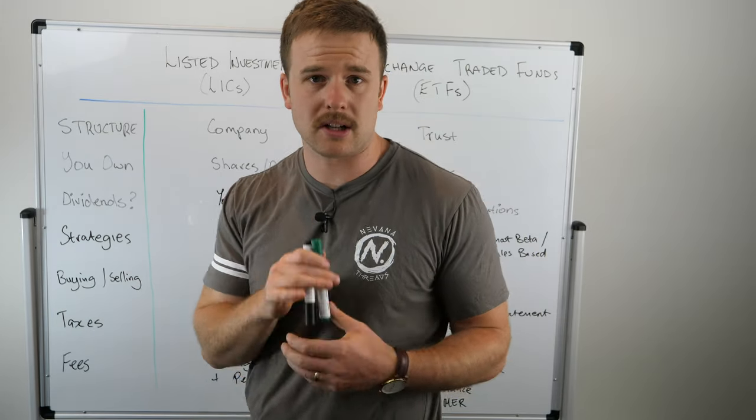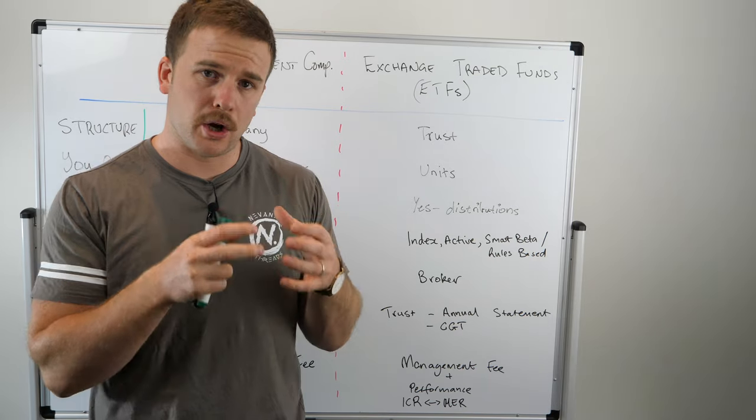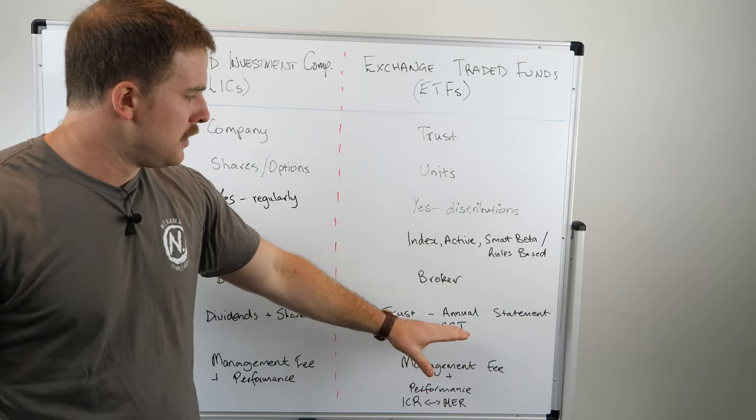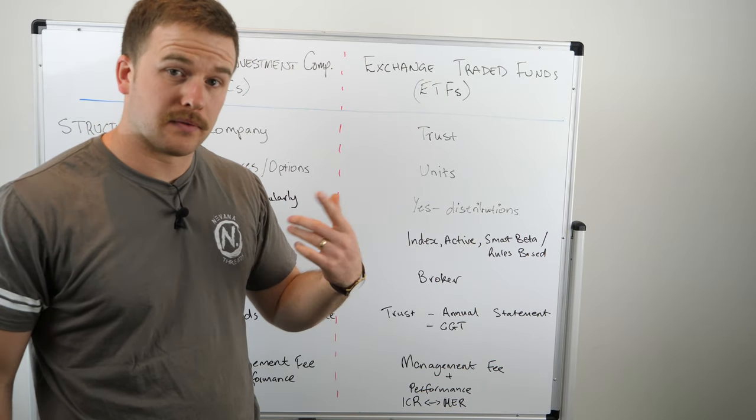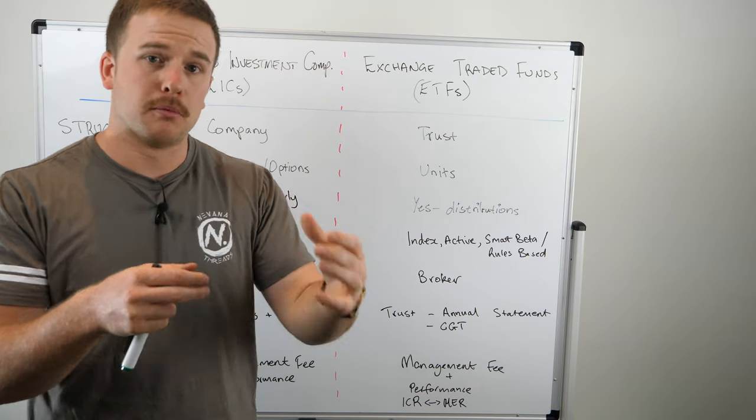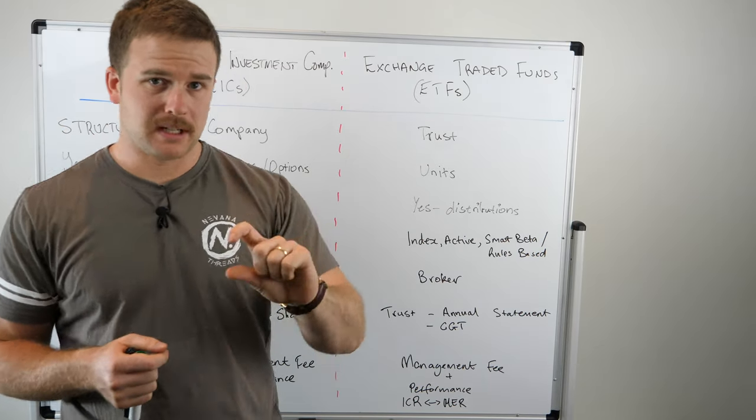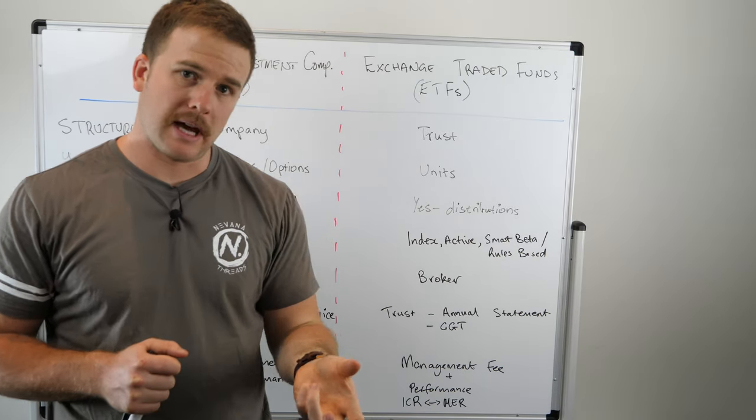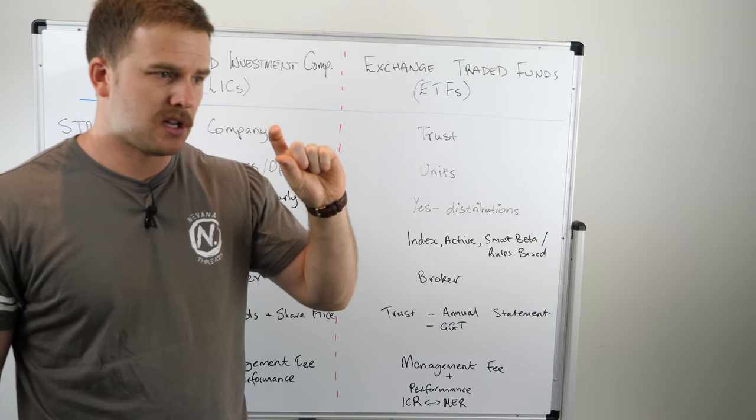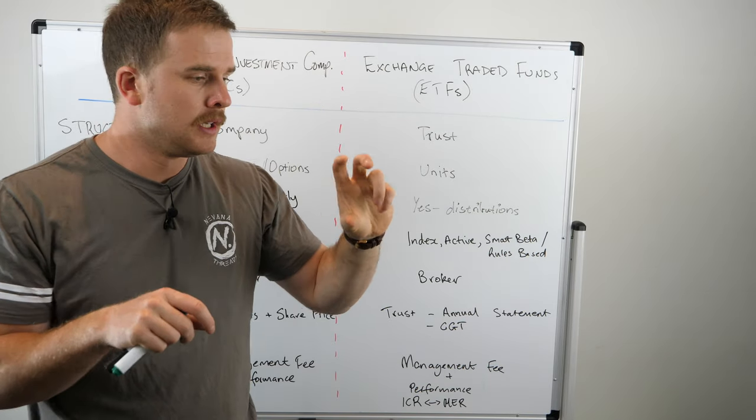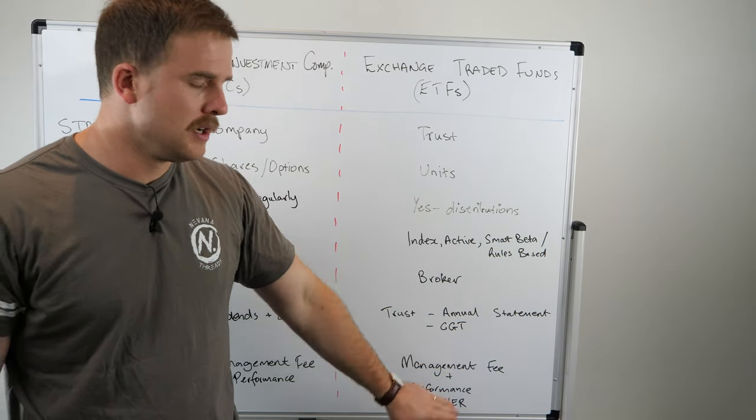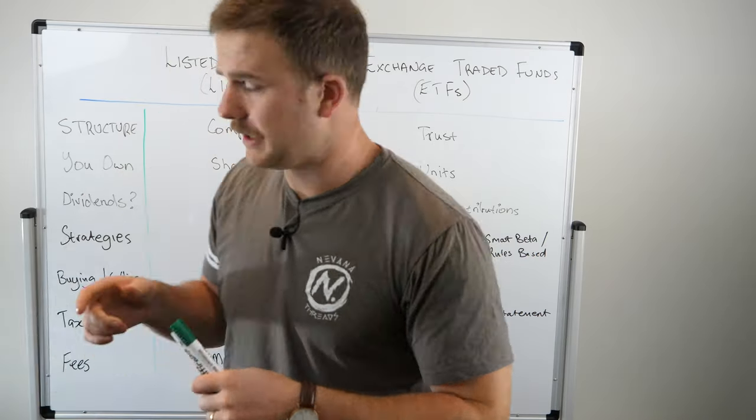In an exchange-traded fund, it's slightly different because the trust doesn't actually own the units or the investments, it only holds them for you. You'll get an annual statement after the financial year is finished saying what your part of the trust earned and what it is liable for in tax. You will get an annual statement which will break down how much income you earned and how much capital gains you're responsible for. You'll also pay capital gains tax when you buy low and sell high.